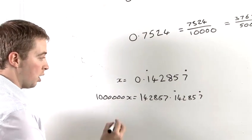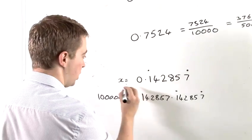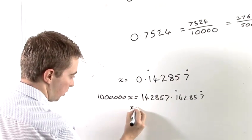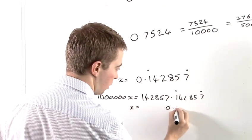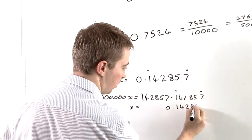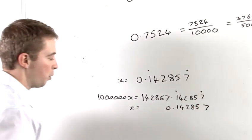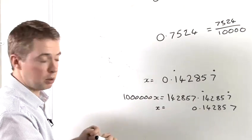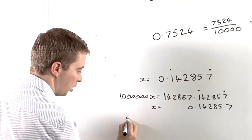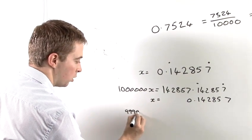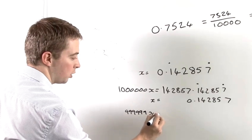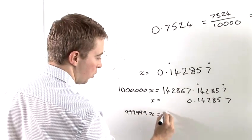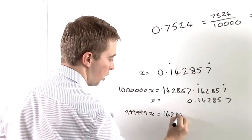Now we have this. What we can do is take our other x. And what we're going to do now is take this bottom line away from this top line. That leaves us with 999,999x equal to 142857.